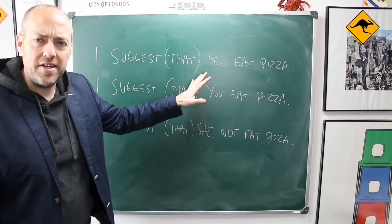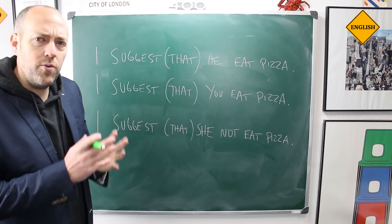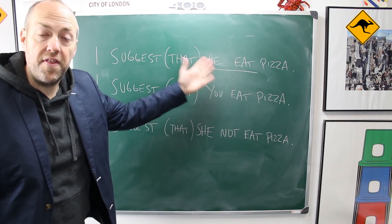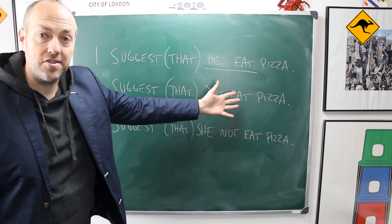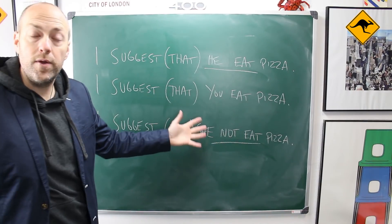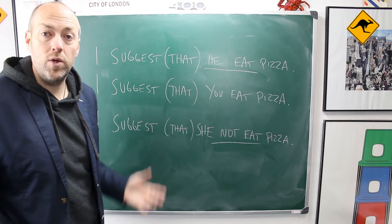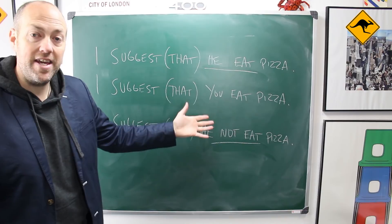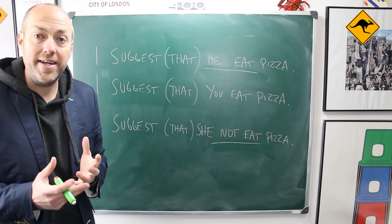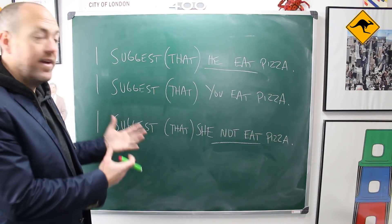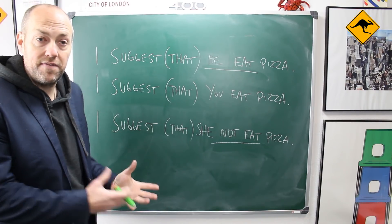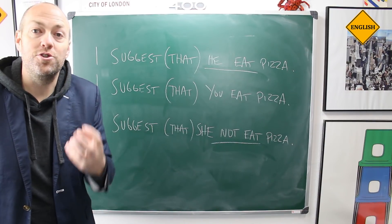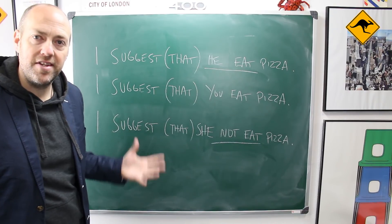In the first sentence and the third sentence, it's very easy to see the subjunctive being used because normally with 'he' we would use 'eats.' And here, if we want to negate a verb, normally we would use 'don't' and not 'not.' But in the second sentence, it's completely opaque — it's impossible to know whether it's using the indicative or the subjunctive mood. And that's one of the reasons why English developed other ways to express this idea.